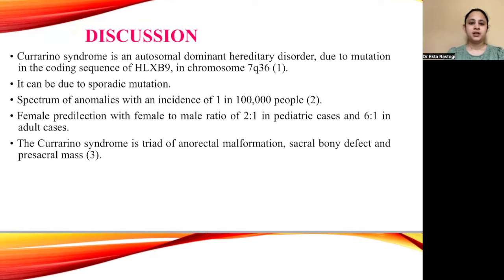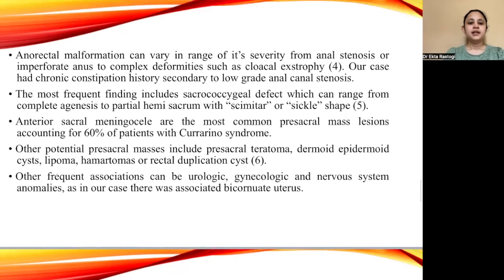In discussion, Currarino syndrome is an autosomal dominant hereditary disorder due to mutation in the coding sequence of HLXB9 on chromosome 7q36, though it can also occur due to sporadic mutation. The spectrum of anomalies has an incidence of 1 in 100,000 people. There is a female predilection with a female-to-male ratio of 2:1 in pediatric cases and 6:1 in adult cases. The triad consists of anorectal malformation, sacral bony defect, and pre-sacral mass. Our case had chronic constipation secondary to low-grade anal canal stenosis.